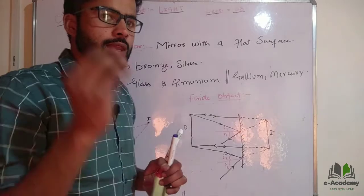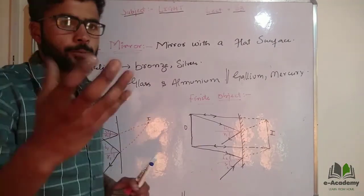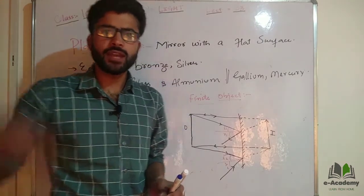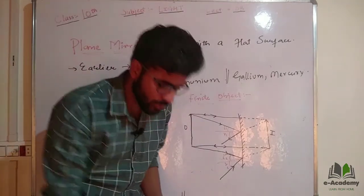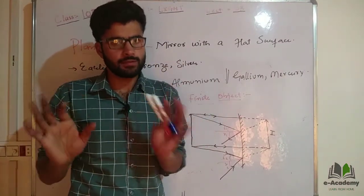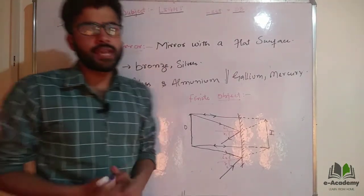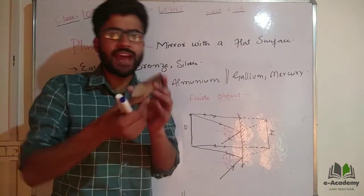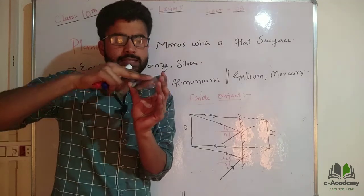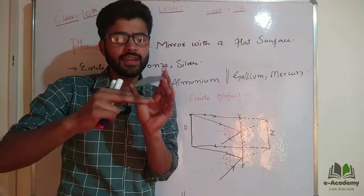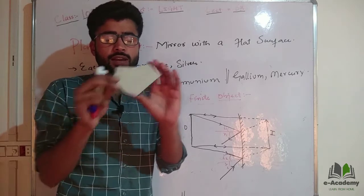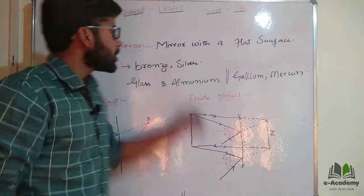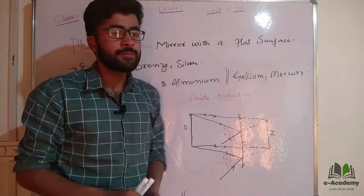Now students, we will learn about the plane mirror. You will know that the plane mirror is everywhere — in our house, in the bathroom, in the car, wherever you go, you will find a plane mirror. What is a plane mirror? It is a mirror with a flat surface. The surface is flat with no curvature — neither inverted nor outwards. So the plane mirror has a flat surface.